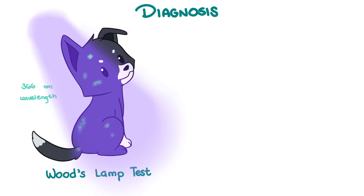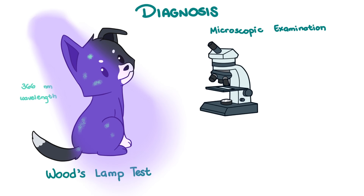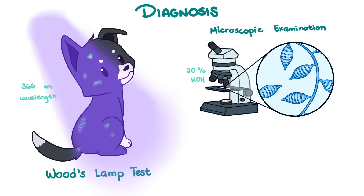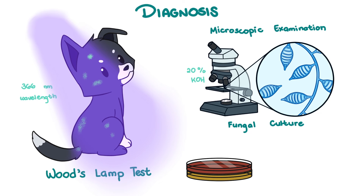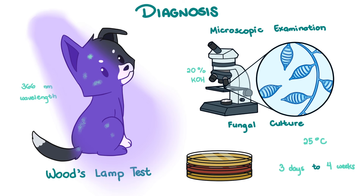Further examination can be done through a microscope or a fungal culture. In microscopic examination, hair and skin scrapings from the periphery of the lesions are mounted onto a slide with 20% potassium hydroxide, which makes the sample more transparent while leaving the fungal structures intact. Fungal culture is the most accurate means of diagnosis — hair and skin samples are placed onto selective media such as Sabouraud dextrose agar, dermatophytes medium, or rapid sporulation medium, and incubated at 25°C. Growth can happen within the first 3 to 7 days, but may take as long as 4 weeks.